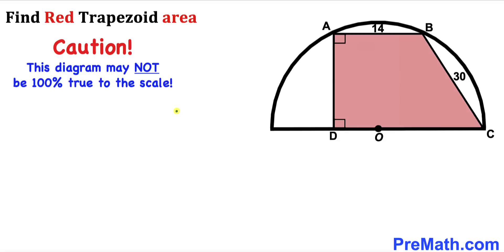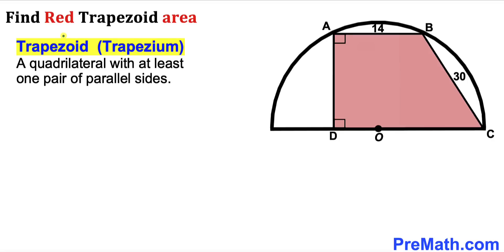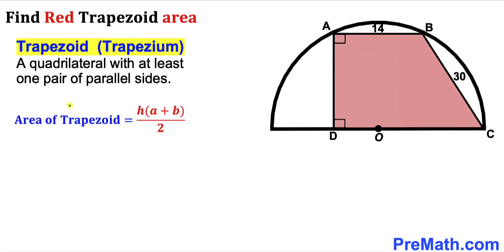Please keep in mind that this figure may not be 100% true to scale. A trapezoid — sometimes called a trapezium — is a quadrilateral with at least one pair of parallel sides. As you can see in the diagram, this side is parallel to this one. Now let's recall the area of a trapezoid formula.